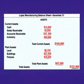Now let's enter all these figures on our balance sheet for Lopez Manufacturing. You can see that we have entered all of the current assets: cash of $14,800, notes receivable $2,600, accounts receivable $37,820, and inventory of $49,680. We add these assets to get total current assets of $104,900.